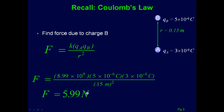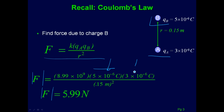A typical calculation we did last time was: say we had some charge Q_B, and we wanted to find the force that Q_B applies to Q_A. We find the absolute value, so we don't plug in any signs. We put in the two charges — 5×10⁻⁶ and 3×10⁻⁶ — divide by the distance squared, and get that the force is about 6 newtons. Since both are positive charges, the direction is straight down.